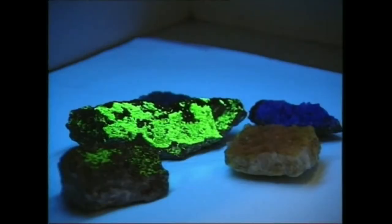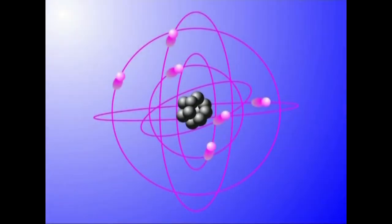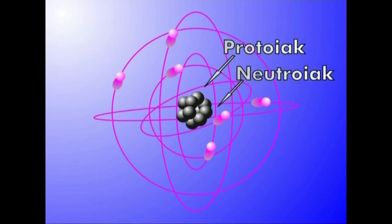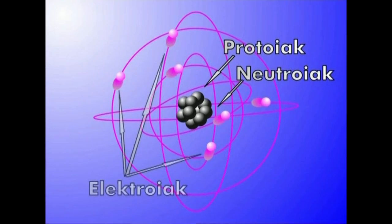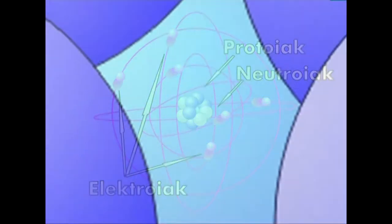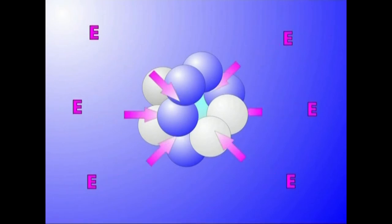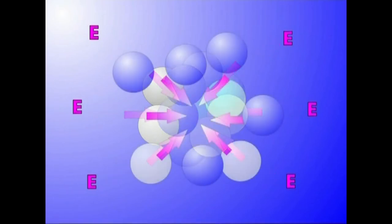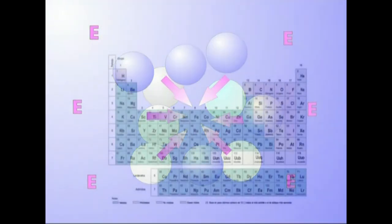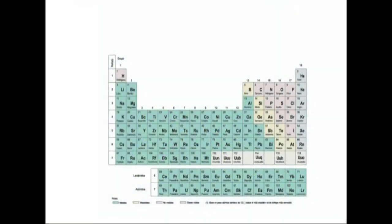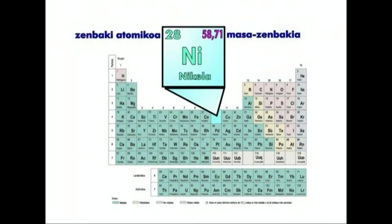Bakarka edo antzekoekin molekuletan kombinaturik existi daitekeen elementu baten zati txikiena da atomoa. Protoiak eta neutroiak biltzen diren nukleoaz eta horren inguruko elektroiez dago osatua. Nukleoaren lotura energia nukleoa bere osagaitan banatzeko behar den energia kantitatea da. Lotura energia handieneko elementuak taula periodikoaren erdialdean daude; horiek dira nukleo egonkorrenak.